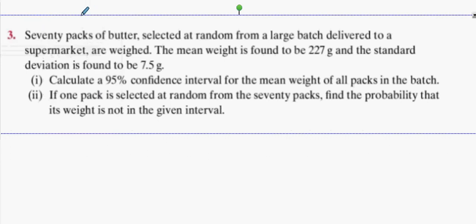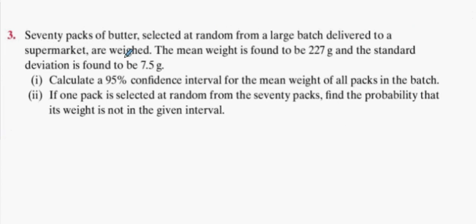Alright guys, 70 packs of butter, n equals 70, selected at random, delivered to the supermarket. The mean weight is found to be 227 grams and the standard deviation is found to be 7.5 grams. Calculate the 95 percent confidence interval for the mean weight of all packs in the batch.